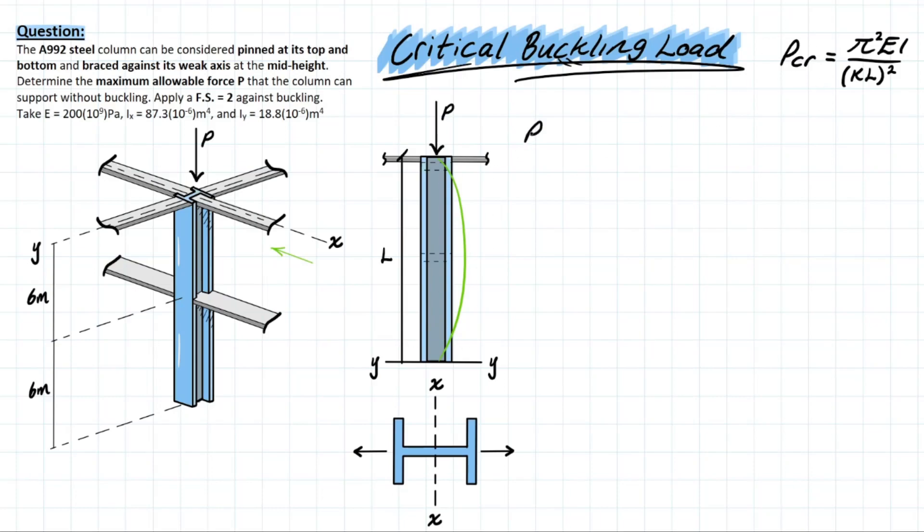We're looking for the critical buckling load with respect to x. So we have π² EI, and we know we are using Ix here. We have KL, which is super simple in this case. K is going to equal 1 since it's a pin-pin configuration, and our L is the entire length of this column, so L is 6 plus 6, which is 12 meters.